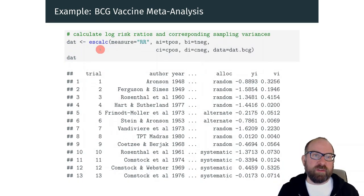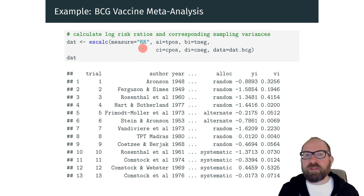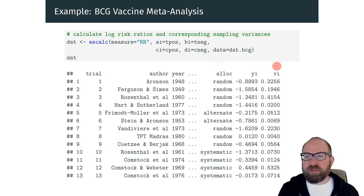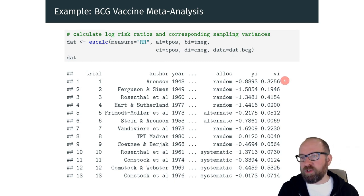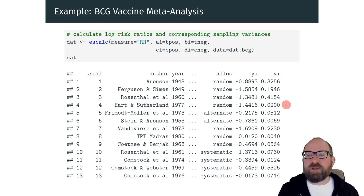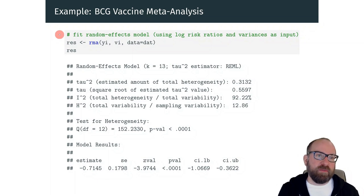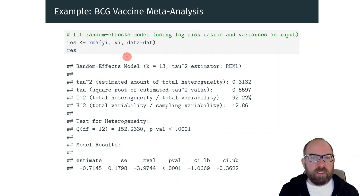We can compute the log risk ratios with the escalc function. We have to specify the type of measure — RR stands for log risk ratios. Then we give the function the information so it can compute these log risk ratios. Once you run this, the dataset includes two additional variables: yi, those are the log risk ratios, where a negative value represents a lower risk of infection in the vaccinated group; and vi, those are the sampling variances, which are sometimes large or sometimes smaller depending on the size of the studies. Finally, we can fit the random effects model with the rma function, giving it the effect sizes and the corresponding variances.